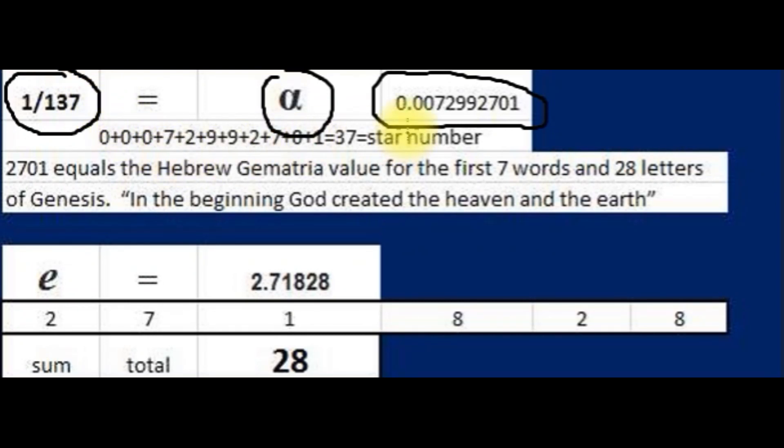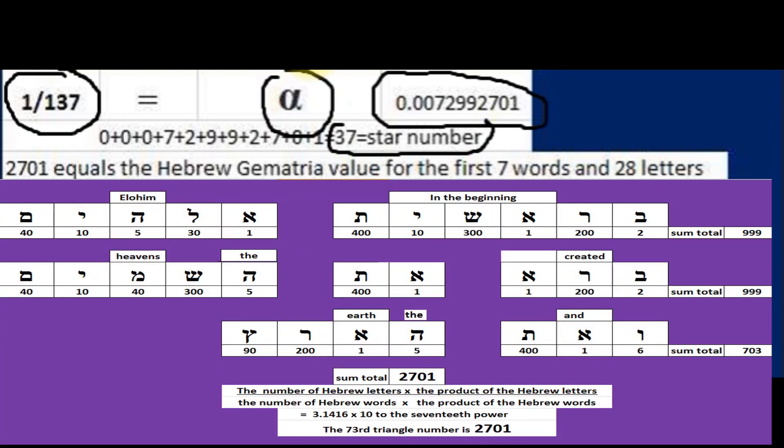When adding the numbers after the decimal point 0.0072992701, the sum total is star and triangle number 37. 37 times 73 equals 2701. 2701 is the 73rd triangle number.